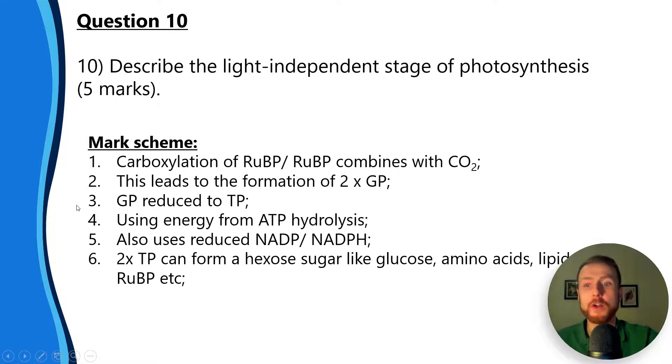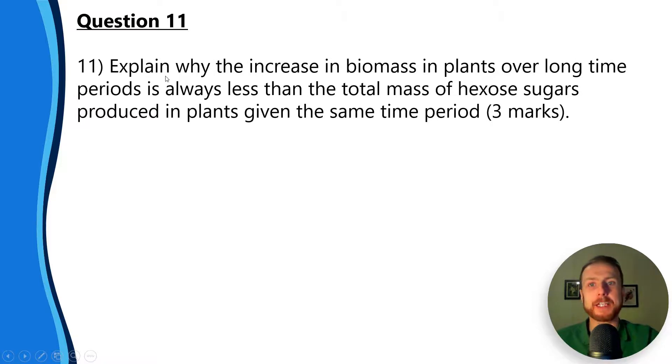Number five: it also uses reduced NADP. AQA favor reduced NADP over NADPH - you'll always see reduced NADP first and NADPH after, or at least I've seen it in the majority of questions. Number six: two times TP can form a hexose sugar like glucose, amino acids, lipids, RuBP, etc. That's a full description there - six ways to get one of the five marks.